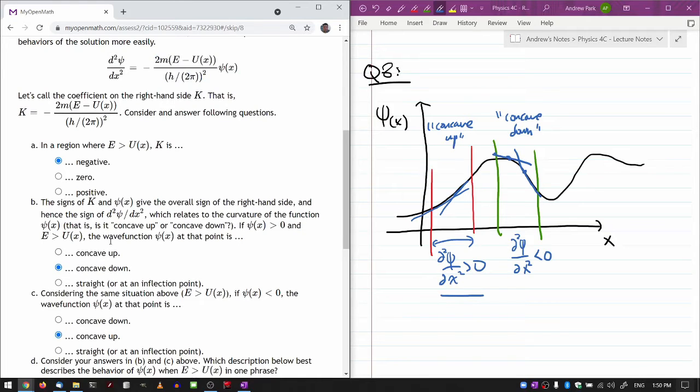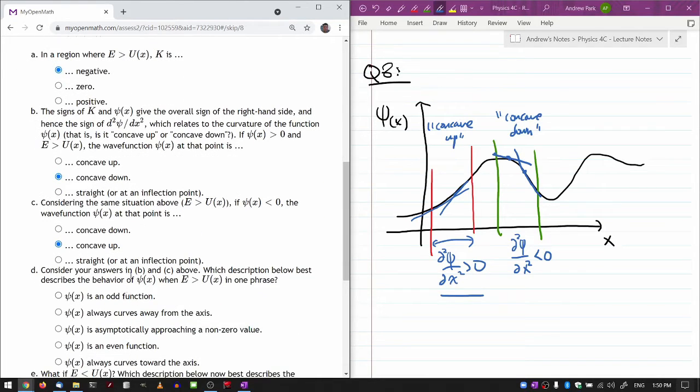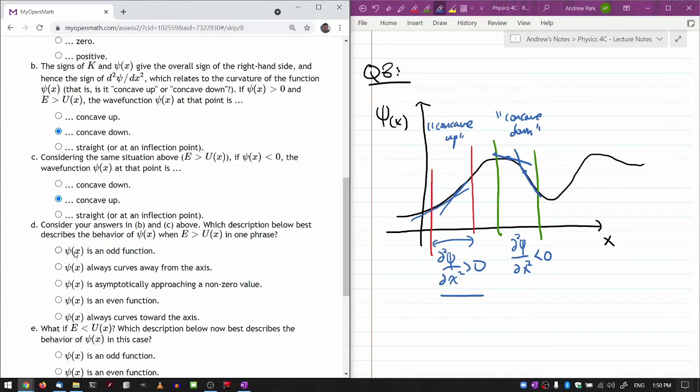Combining B and C, which asks which description below best describes the behavior of psi when E is greater than U of x, let's just go through each choice one by one. Psi of x is an odd function—I don't think I have enough to say that, because odd means when I replace x with minus x, the whole function changes to minus of its previous, and I don't think I have enough evidence to say that.